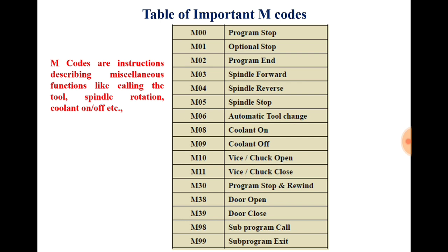The next code is M38 — door open. Your CNC lathe or CNC mill will have a door, and that can be opened or closed automatically. For opening the door the code is M38, and for closing the door the code is M39.